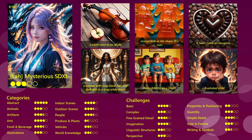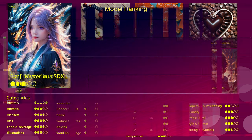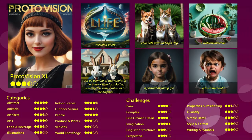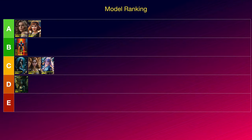Then we have La Mysterious SDXL, again great at abstract scenes and performing pretty well at most other categories, though it does have some flaws, but it is still a great model, so I will put it into C tier. Protovision XL has become one of my favorite models. It is fantastic at creating abstract scenes as well as people, but it is also doing exceptionally well at most other categories, and the overall quality — so definitely tier A.